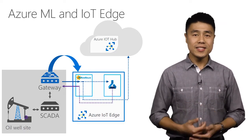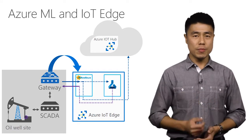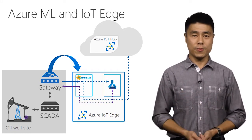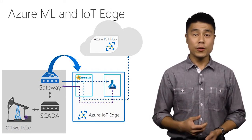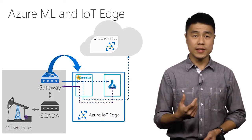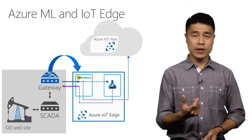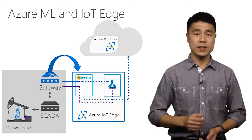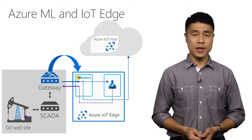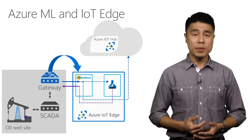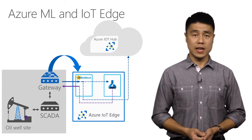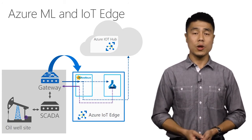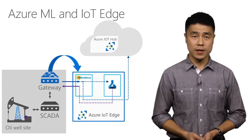In this case, you can imagine using Azure ML to create an anomaly detection model. This model is operationalized as a Docker container, and then using IoT Hub, it's deployed to this edge device. When an anomaly is detected, it can notify the SCADA system to adjust the pump operation or to stop it.